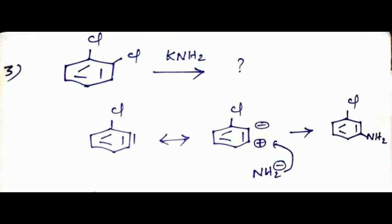Third example: ortho-dichlorobenzene. The meta position hydrogen and ortho position Cl form benzyne. In the second step, the ortho position has negative charge and the meta position has positive charge. Therefore, NH2 minus attacks at the meta position, giving meta-aminochlorobenzene — only one product.